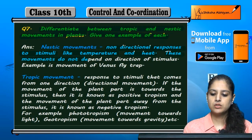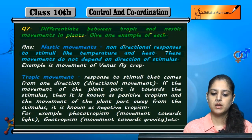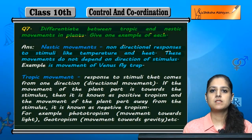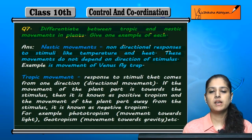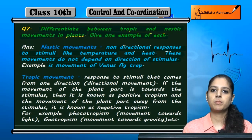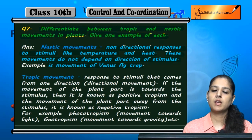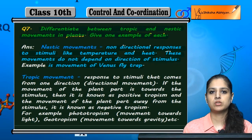Nastic movements do not depend on the direction of the stimulus. For example, the movement of the Venus flytrap — when an insect comes to the Venus flytrap, it starts to move and engulf it, regardless of the direction of the stimulus. Similarly, if you touch the touch-me-not plant, the leaves collapse — not in any particular direction. So non-directional movements are nastic movements.